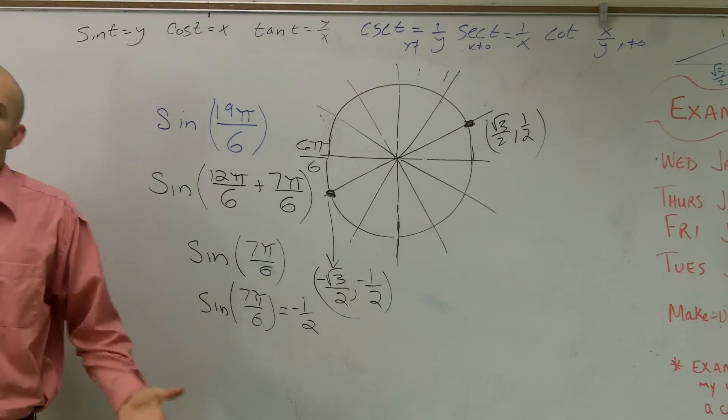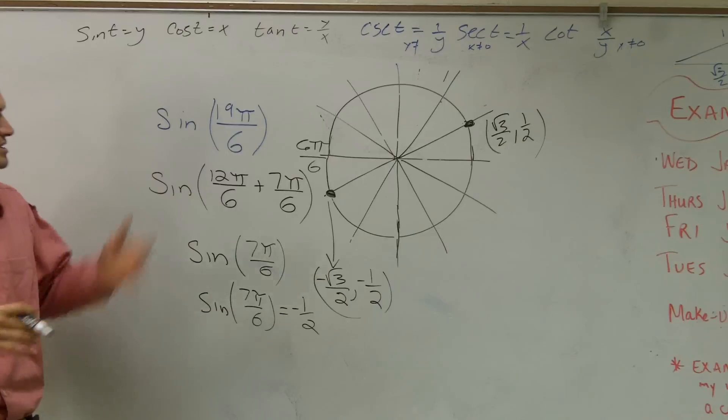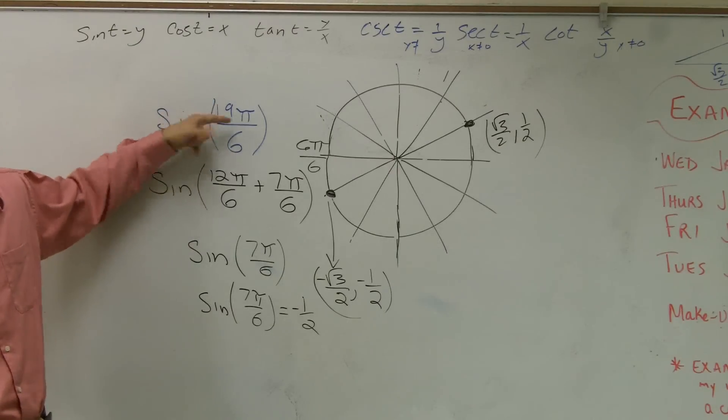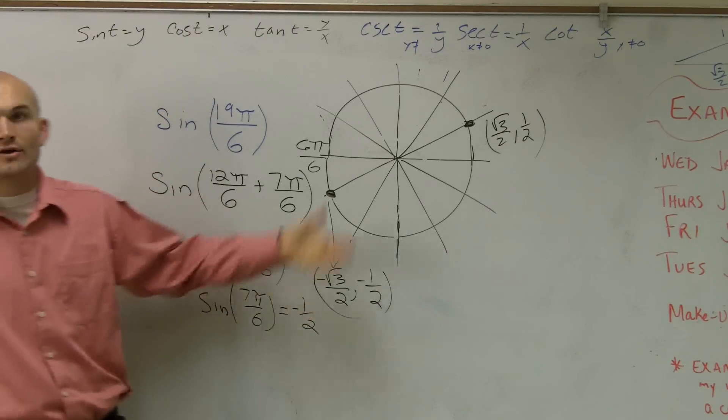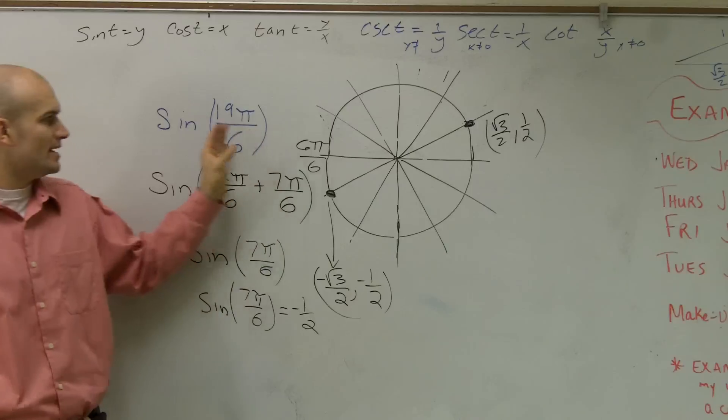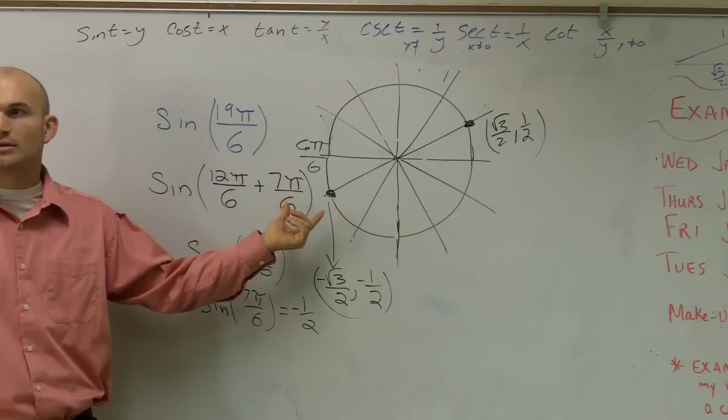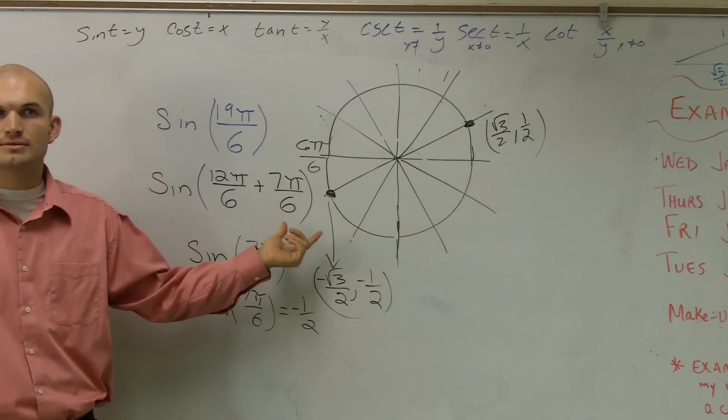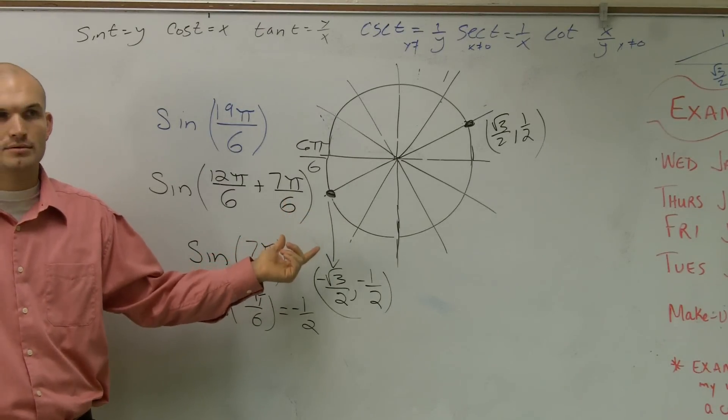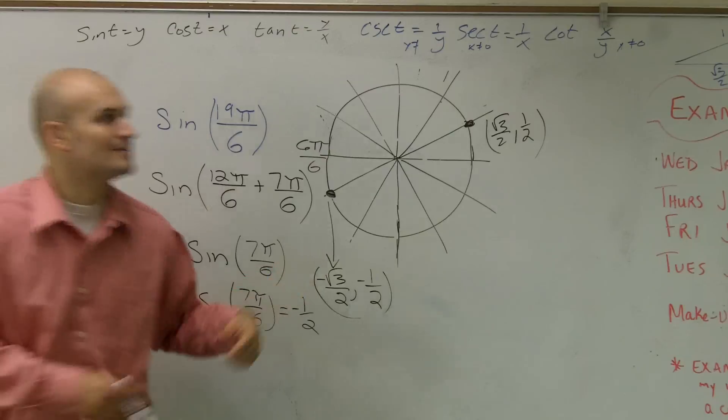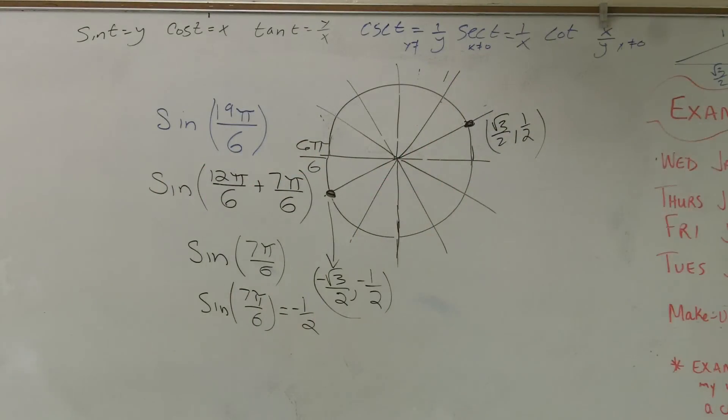All right, so all this is is just kind of a little shortcut. It's nothing really new. It's just letting you know when I'm giving you an angle and it's greater than 2π, you can kind of factor out that 2π and just evaluate for what's added into it. Make sense? Good? Okay, that's it. And one last thing I want to show you.